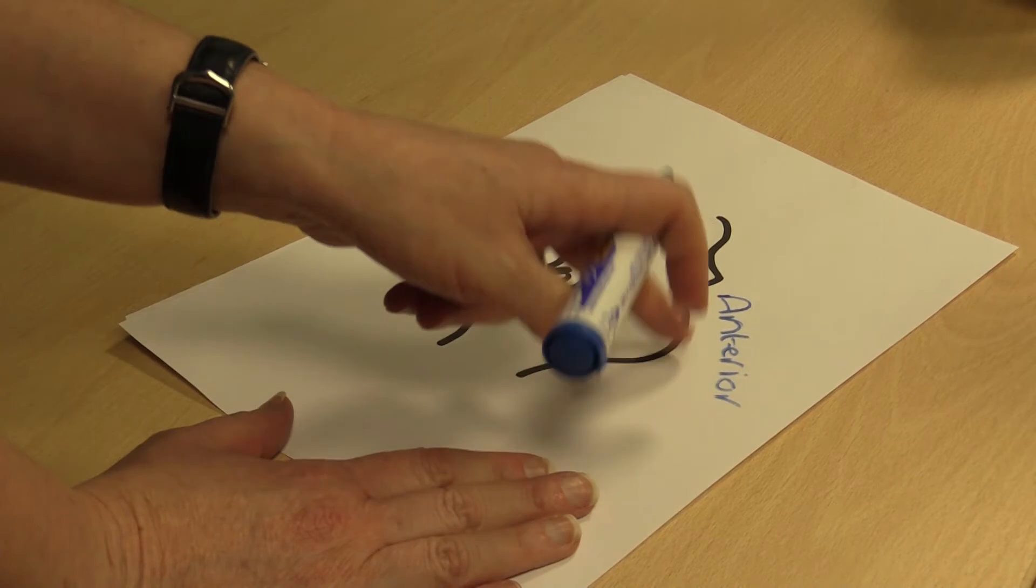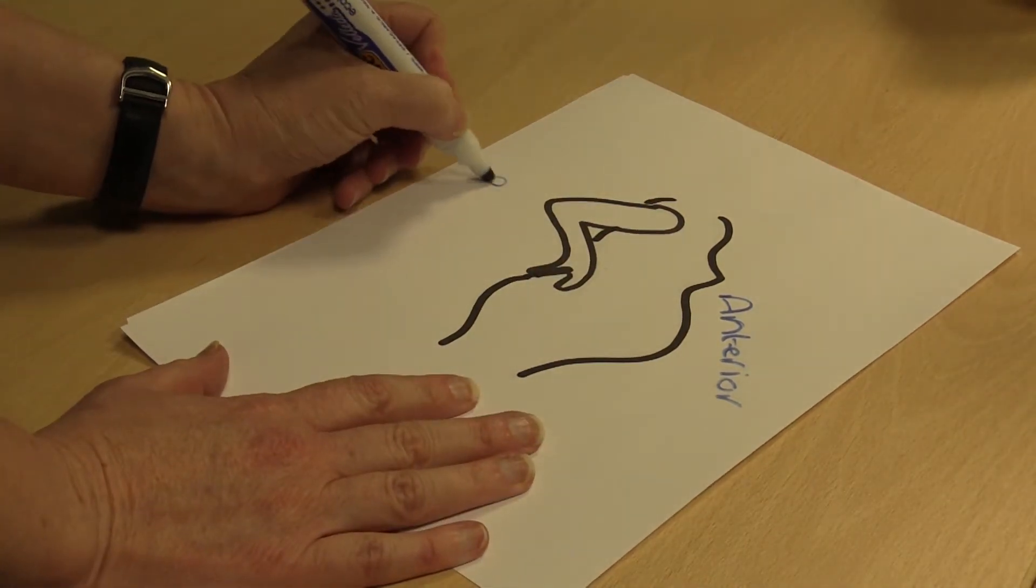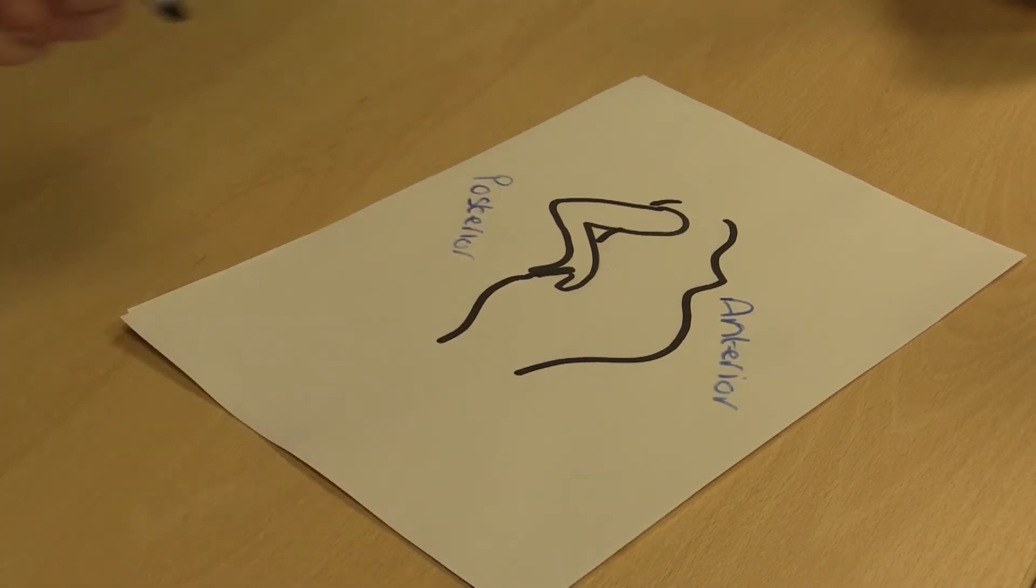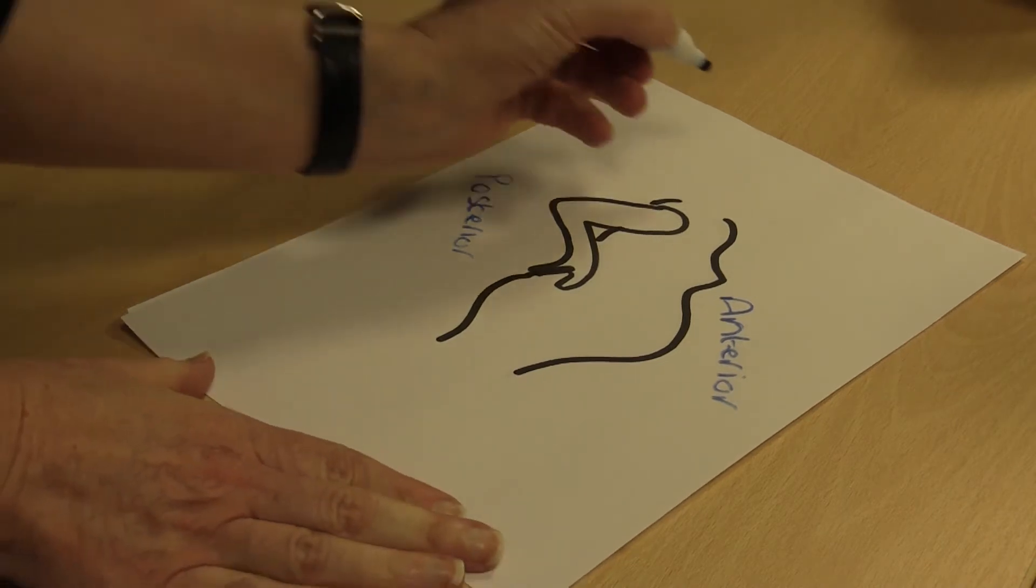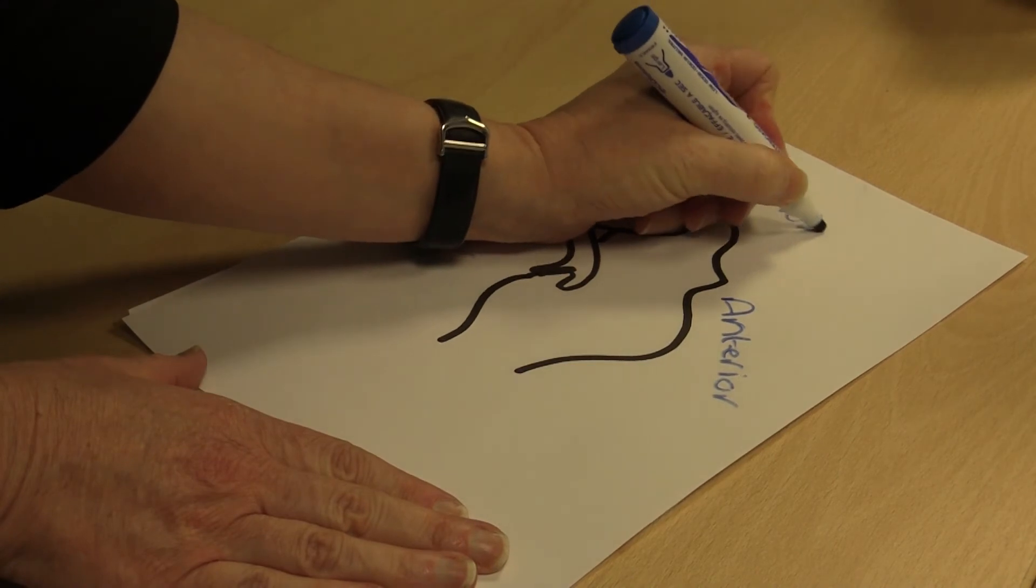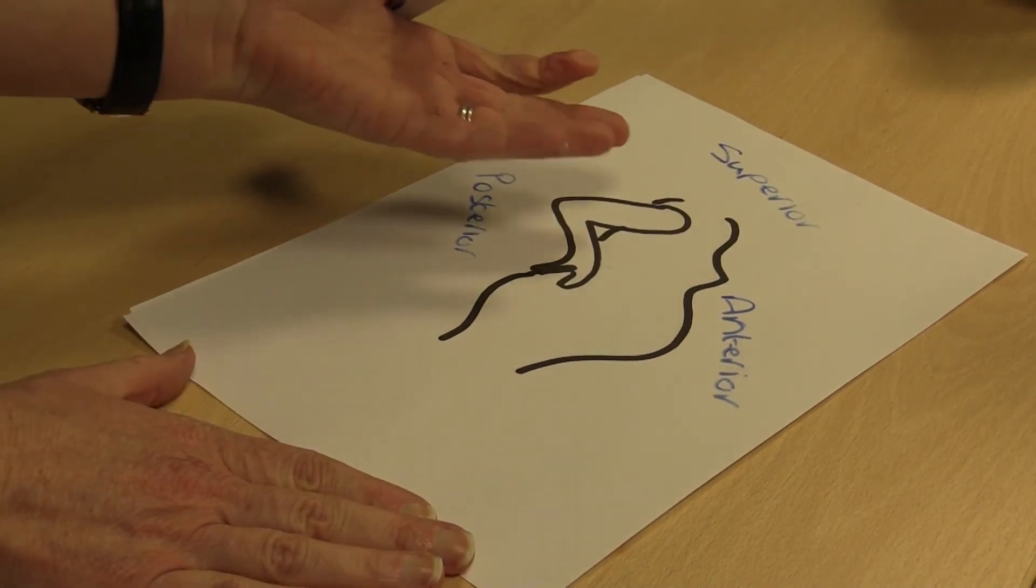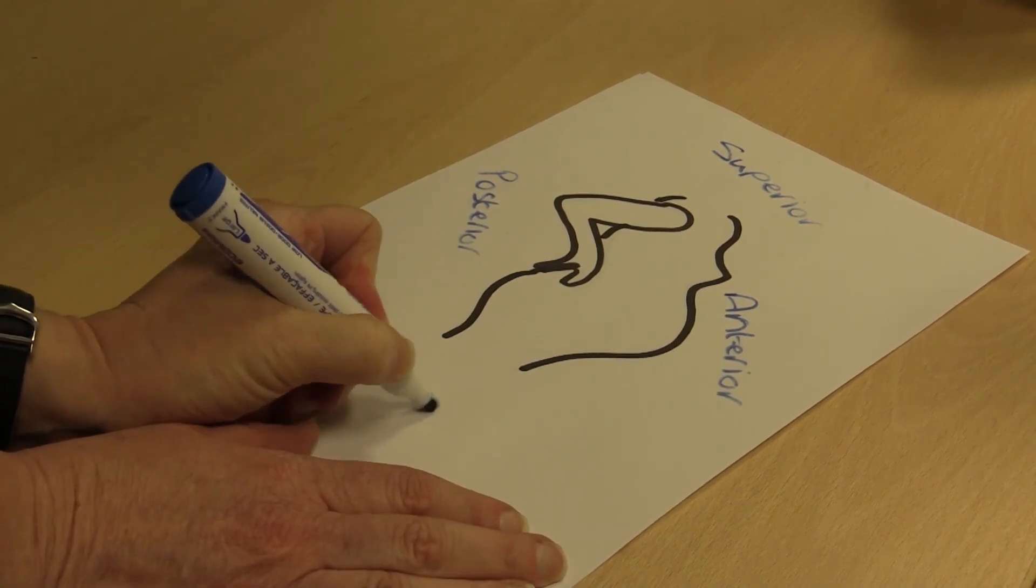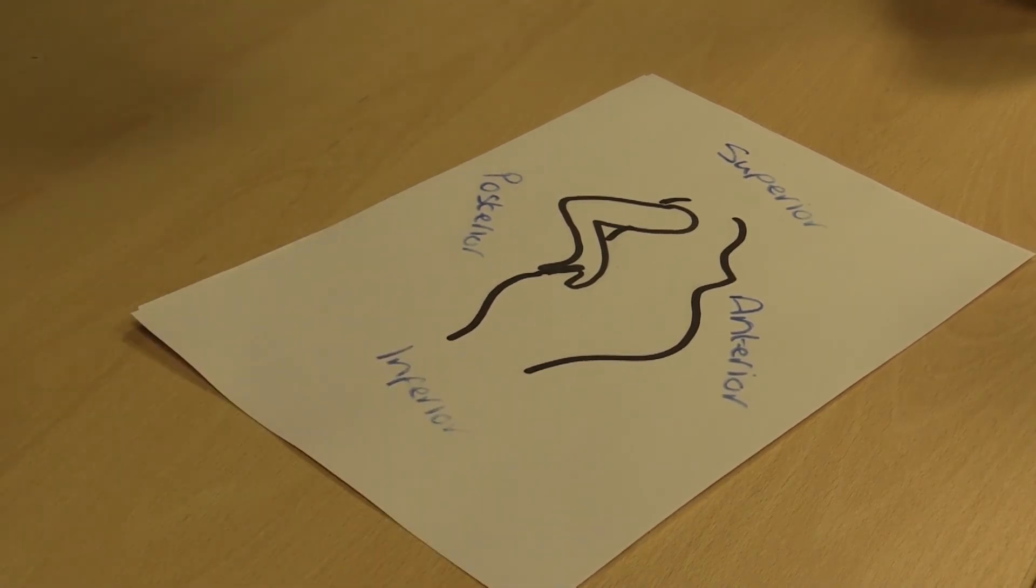Her posterior aspect relates to the back, and then the other two relate to the upper and lower aspects. The upper aspect would be called superior, and anything lower down is called the inferior aspect.